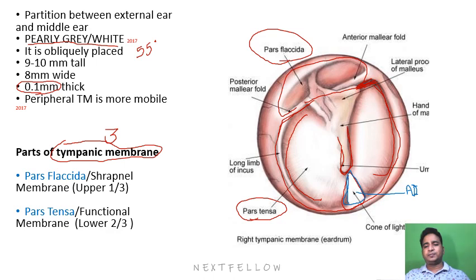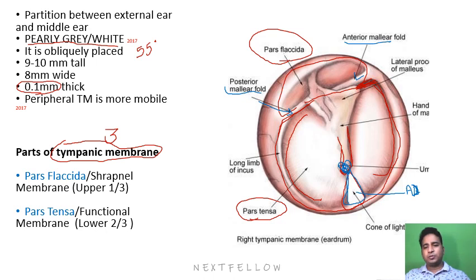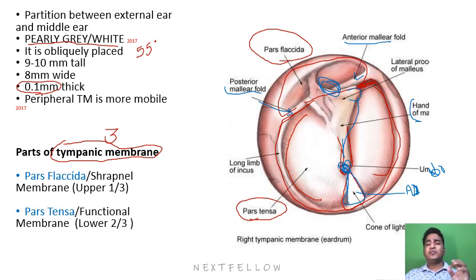The cone of light is an important landmark. There is the posterior malleoar fold posteriorly and the anterior malleoar fold anteriorly. The central part at the tip of the handle of malleus is known as the umbo. The handle of malleus runs through the membrane, with the short process and neck visible. The prussak's space is just above the neck of the malleus and is the first site of cholesteatoma formation.